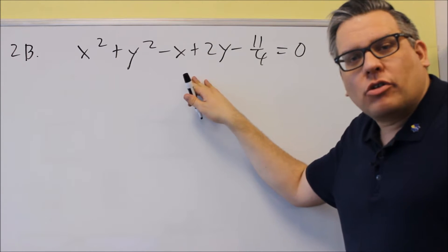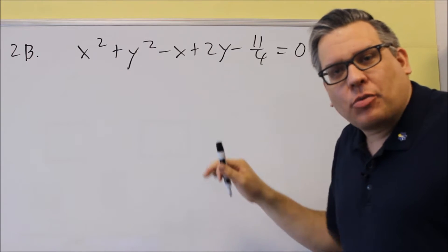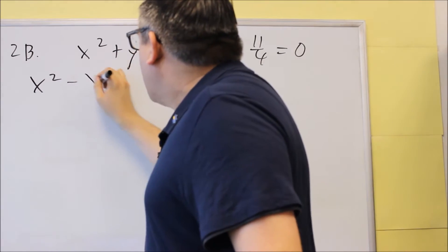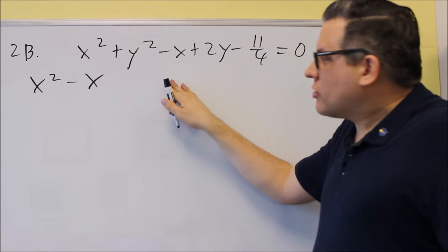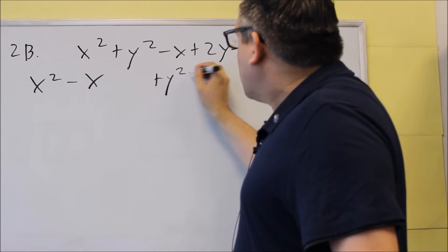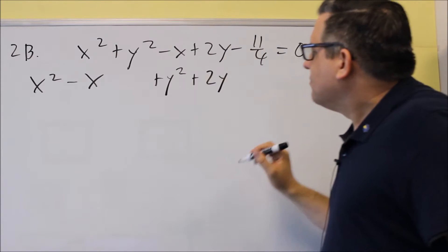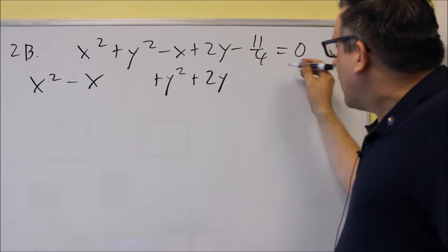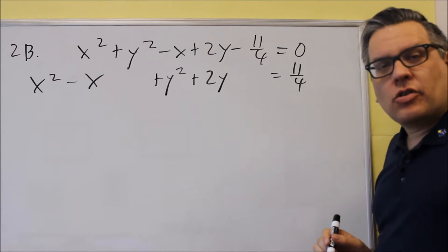The first thing we want to do is get all the like variables together. So I'm going to write x squared minus x, leave a space for the complete the square steps, then plus y squared plus 2y, leave a space for that as well, and put the constant over on the other side.